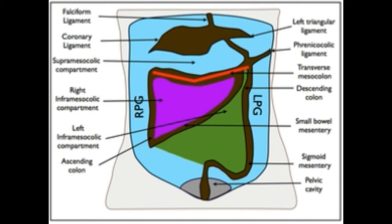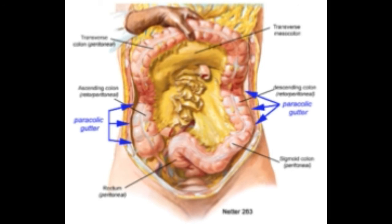The right lateral gutter is much larger and allows for greater drainage than the left gutter. It runs along the right side of the abdominal cavity and begins at the ascending portion of the colon from the right hepatic flexure, or the point where the colon turns from the ascending colon to the transverse colon. This gutter then continues downward and ends below at the cecum and the terminal ileum, or the part where the ileum attaches to the cecum.